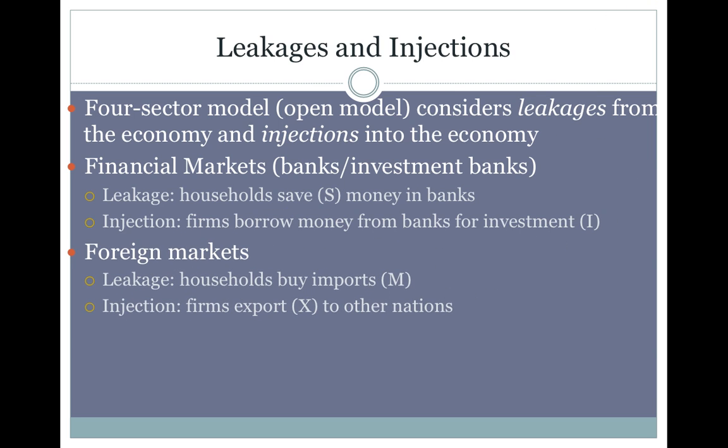Next, foreign markets. The leakage for foreign markets is basically imports, represented by the letter M. For example, if somebody in Germany buys a Japanese car, that's money that flows out of Germany's economy and into Japan's economy. On the other hand, if somebody in the United States buys a German car, that's money flowing out of the US into Germany — and that's an injection for Germany.